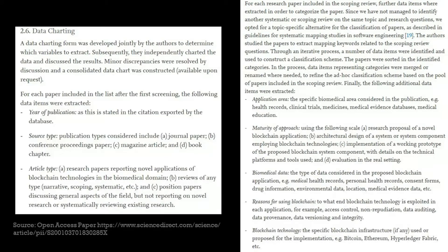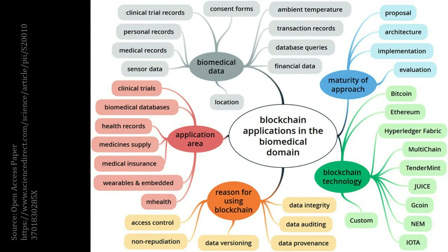If you look at these five items and look at the research questions that they have, there is a one-to-one mapping — which means the first research question relates to the first item that they want to extract, and so on. So having your research questions finalized and the mapping that we did from the research questions to your data extraction is now something we have to actually make use of. The result of that activity — using the research questions and the data extraction — has now resulted in a knowledge map or a thematic map based on the research questions.